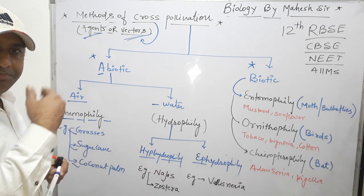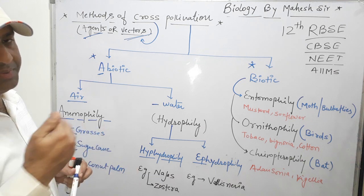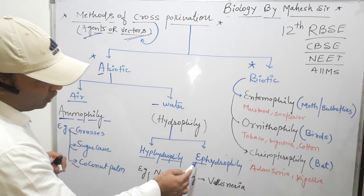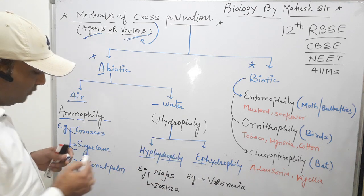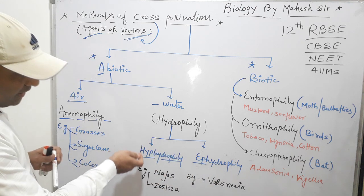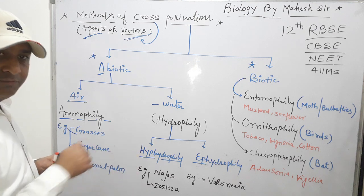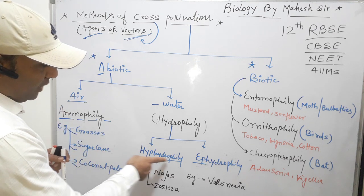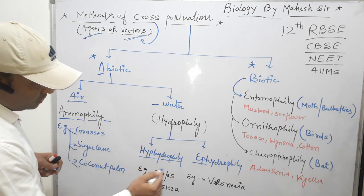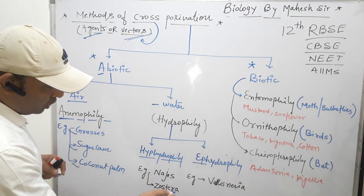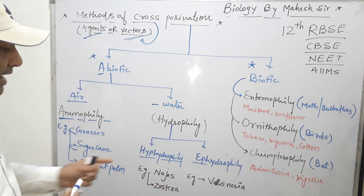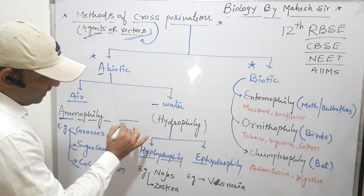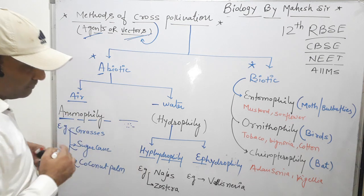The first type is hypo-hydrophily, which means when the pollen grains are present inside the water and then move with the help of water currents. That is called hypo-hydrophily. Examples of hypo-hydrophily are Najas and similar aquatic plants, in which pollen grains are present inside the water.